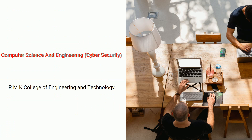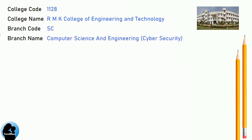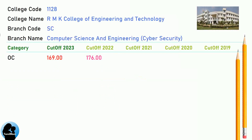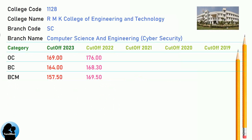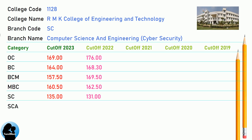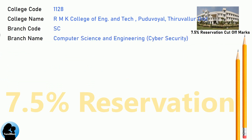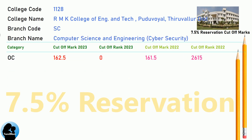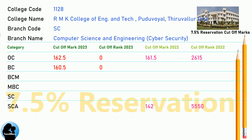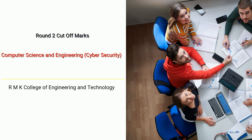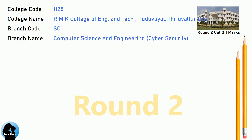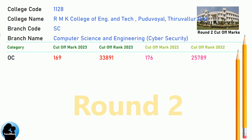DNA cutoff for MK College of Engineering and Technology in Computer Science and Engineering Cyber Security. DNA 7.5 reservation cutoff for MK College of Engineering and Technology in Computer Science and Engineering Cyber Security. DNA Round Two cutoff for MK College of Engineering and Technology in Computer Science and Engineering Cyber Security.